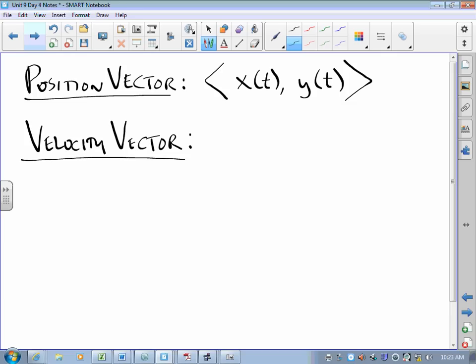When we talk about velocity vectors, we are talking about a vector where the first component is dx dt, and the second component is dy dt.